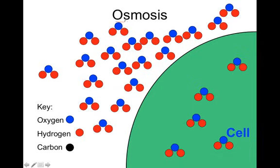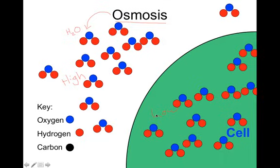Osmosis is a little different than diffusion because of the type of molecule it affects. Looking at this molecule and the key, you'll see one oxygen bonded to two hydrogen, or H2O, which is water. With these water molecules, there's a high concentration outside the cell and a low concentration inside the cell.